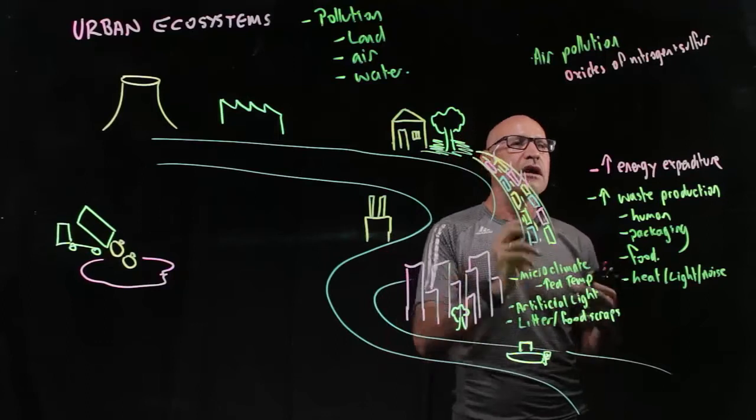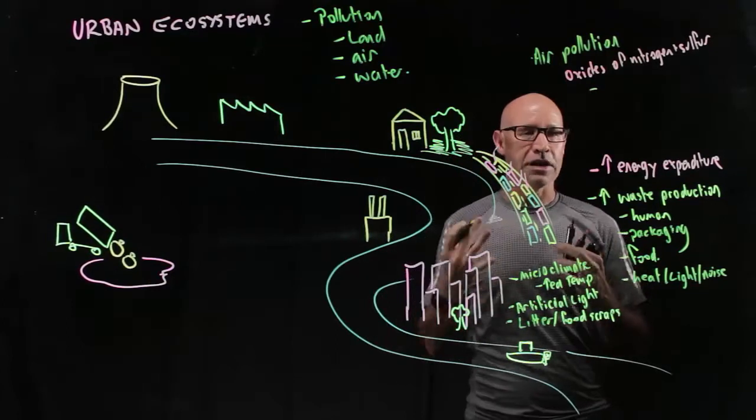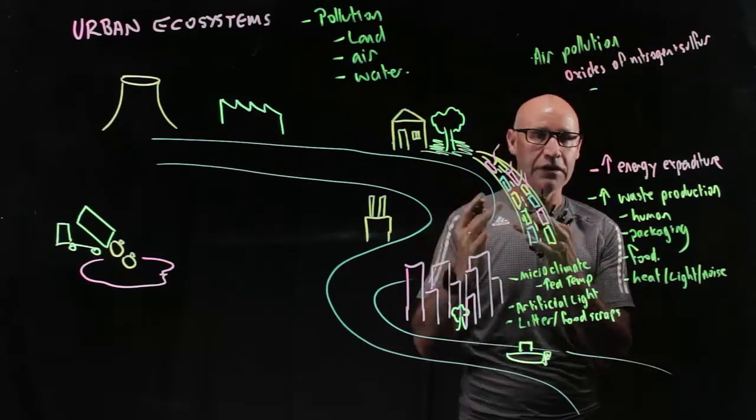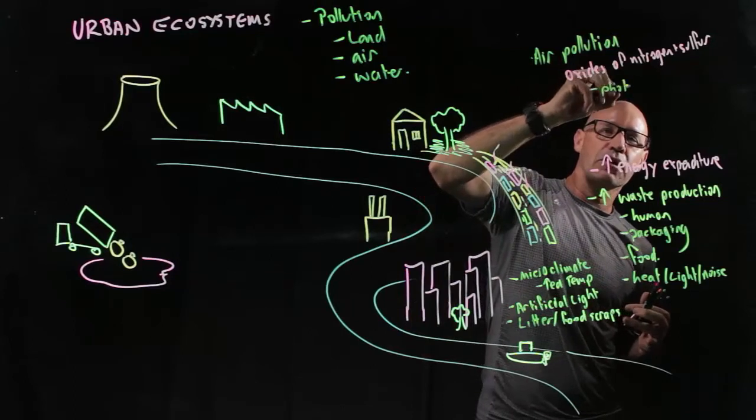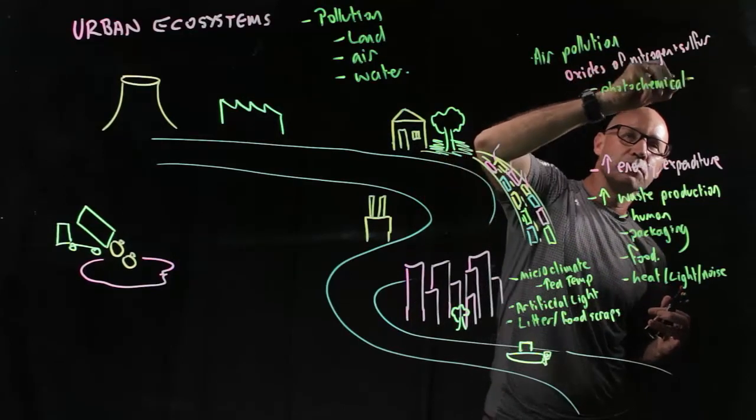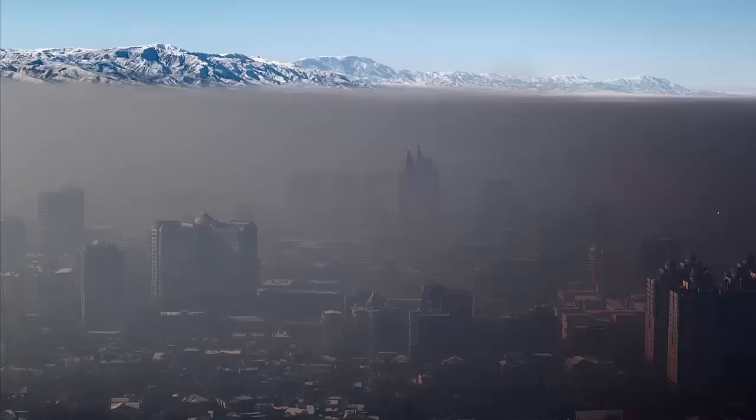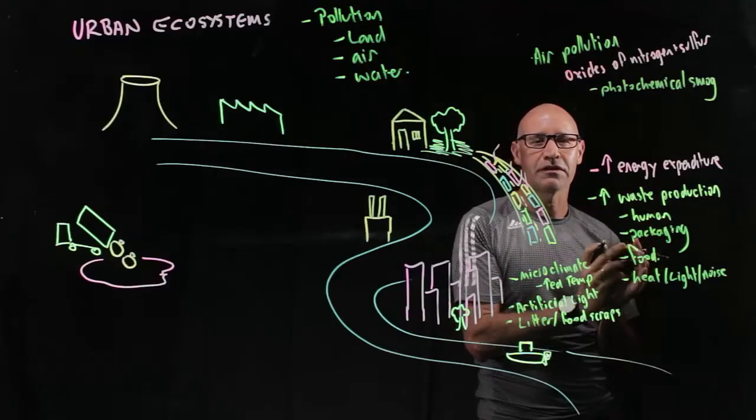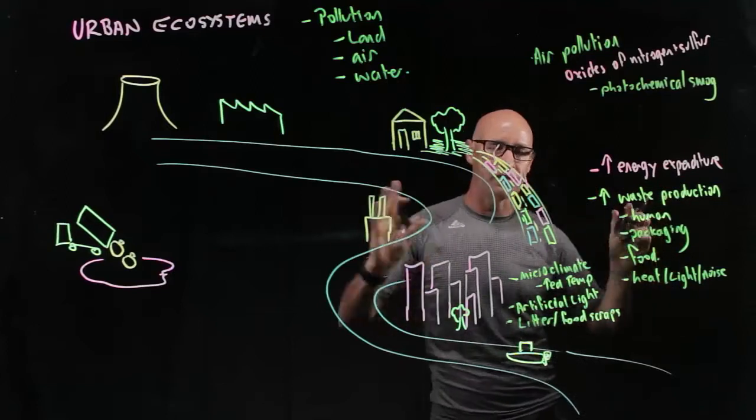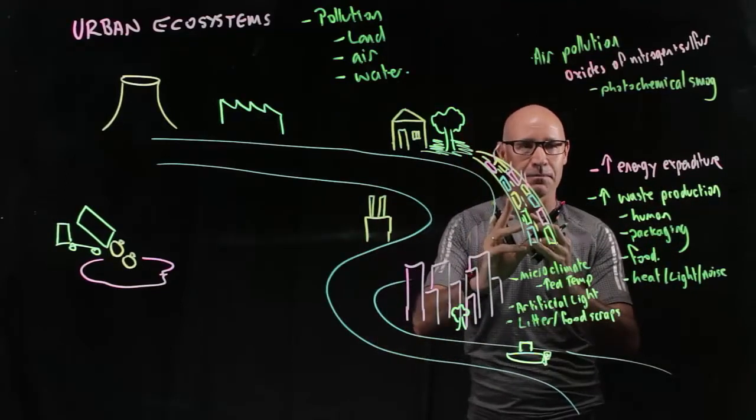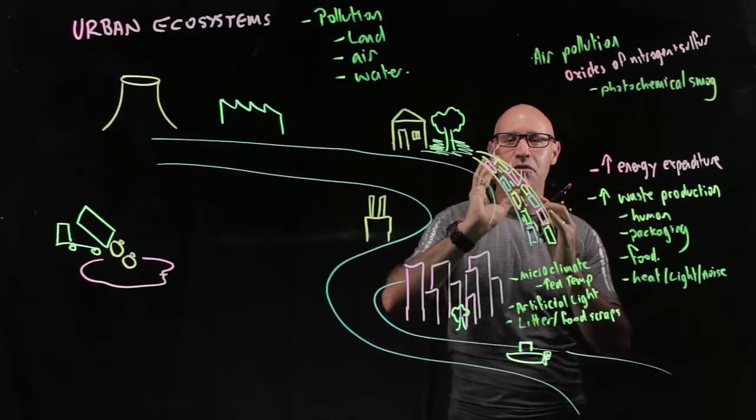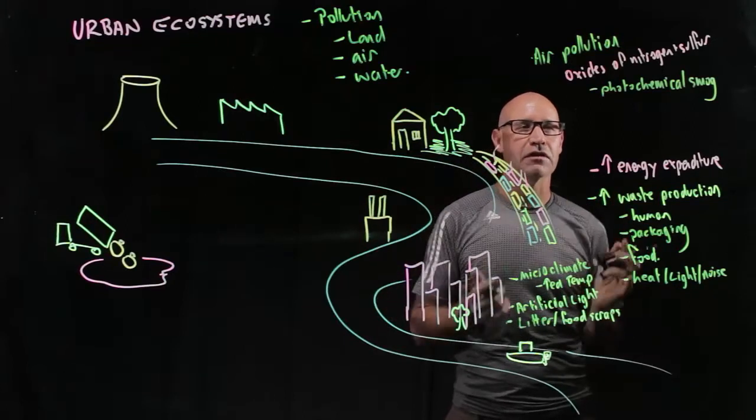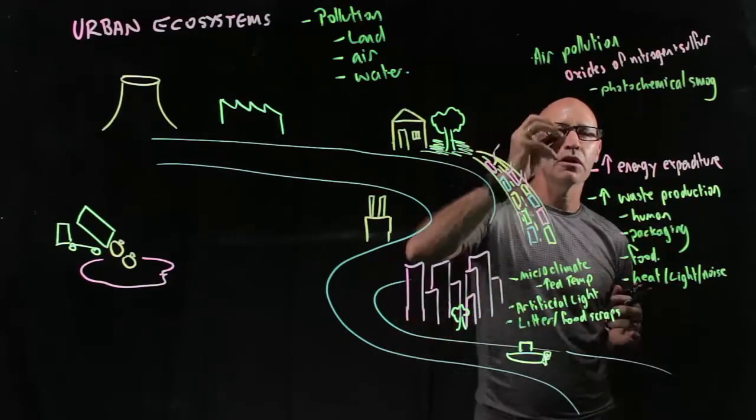As well as that, these oxides can react with the sunlight and cause photochemical smog, which you see in some cities in China and you see it in Los Angeles, for example. So there's some parts of the world that tend to be more affected by these things, partly because of their topography, but largely because of the pollutants that are going into the atmosphere. So you see photochemical smog.